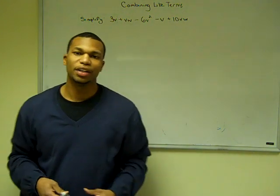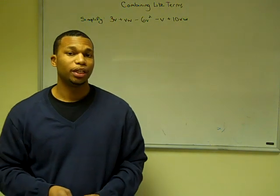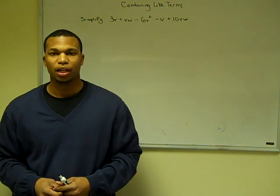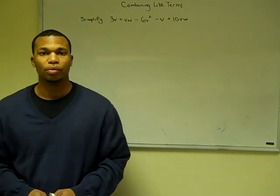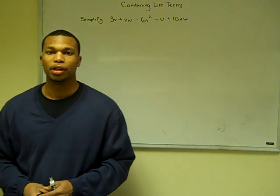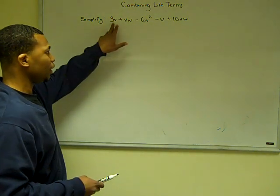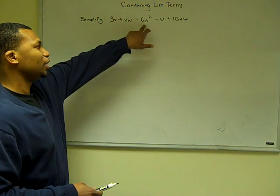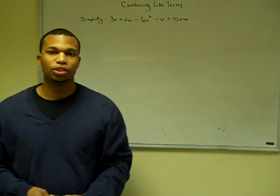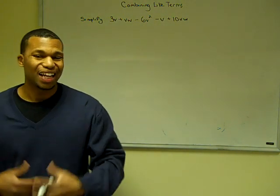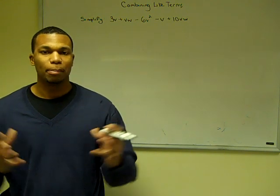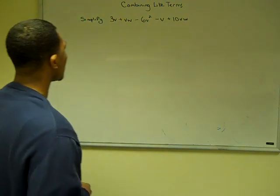With the prior knowledge we've covered, we're now ready to combine like terms. Combining like terms will require the prior knowledge of adding and subtracting integers, so if you're a little rusty on that, you might want to review that video. The example we'll work through is: 3v plus vw plus 6v² minus v plus 10vw. The first thing we want to do is identify all of our like terms. I like to do this using different shapes, so that at the end all I have to do is combine all of my shapes together.